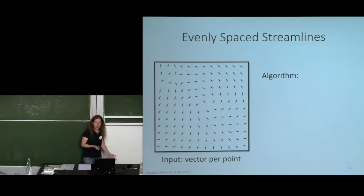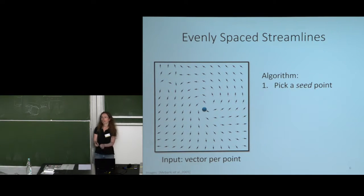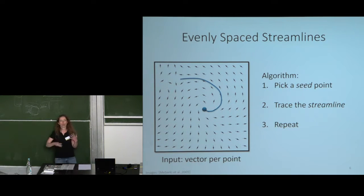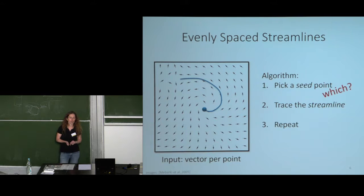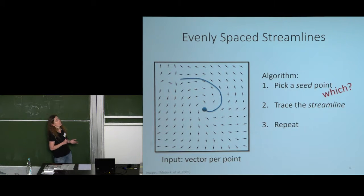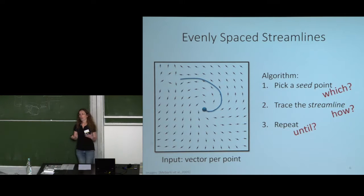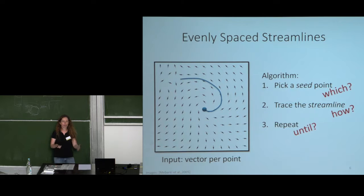The way to generate a set of streamlines is: pick a seed point (the beginning of the path), trace the streamline by walking along the path, and repeat. You pick a point, trace a streamline, pick another point, trace another streamline, and so on. Key questions are: which seed points to pick, how to trace the streamline — that is, how do you go from pointwise orientation information to an actual polyline — and when do you stop?